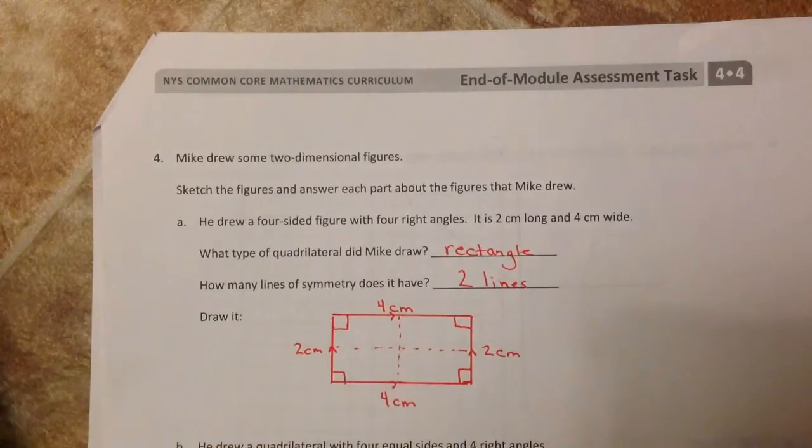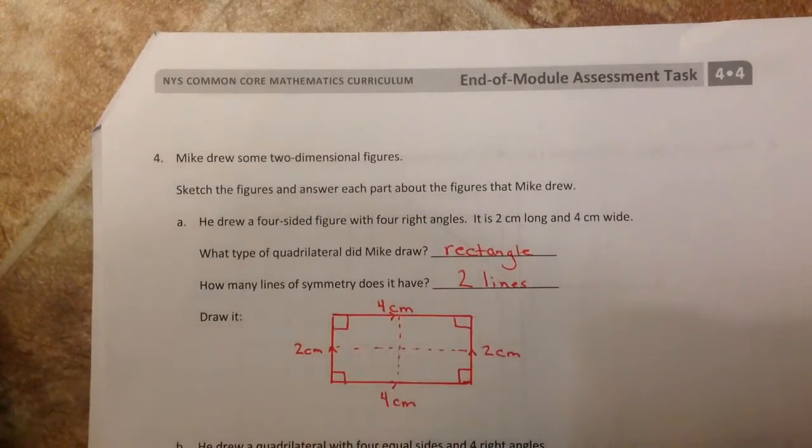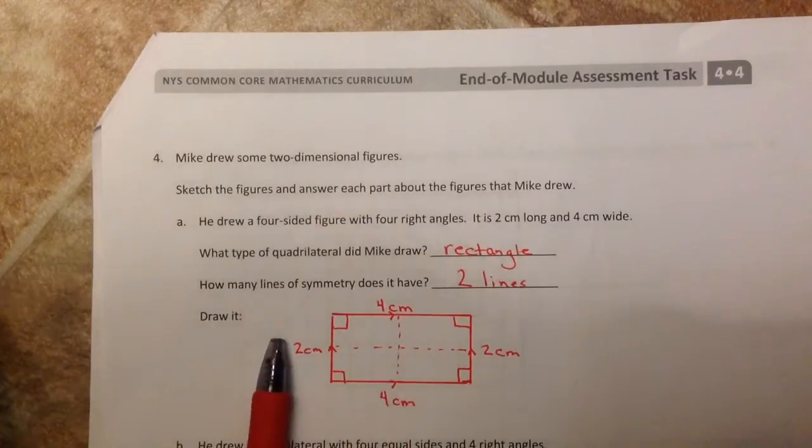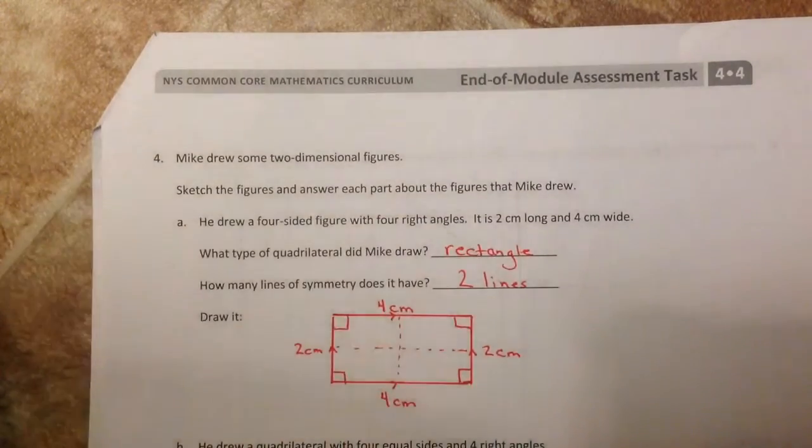If you didn't have a ruler, just do your best. It, of course, turned into a rectangle because my opposite sides were equal, and that allowed me to have two lines of symmetry.